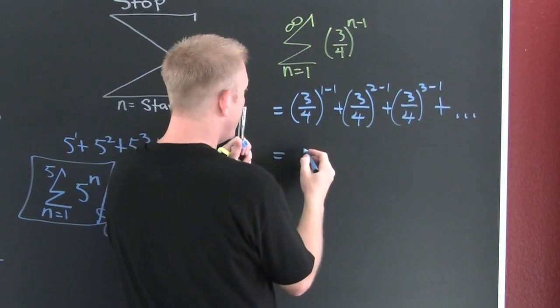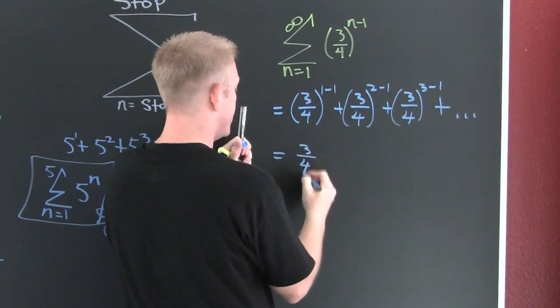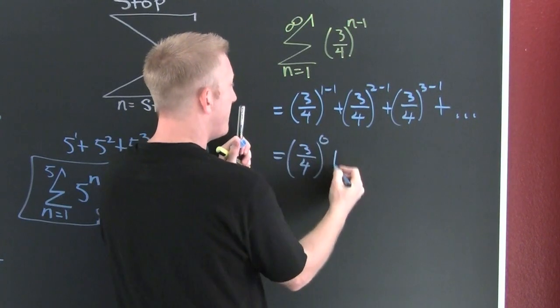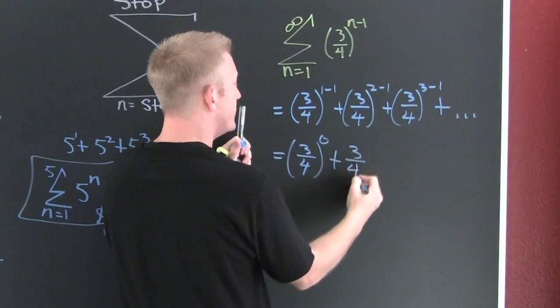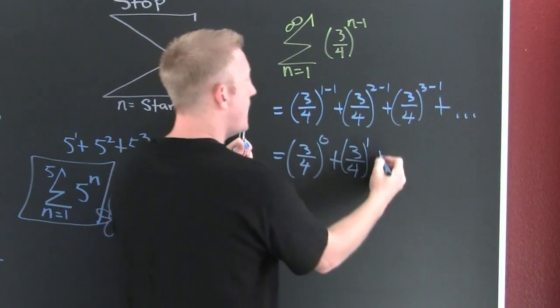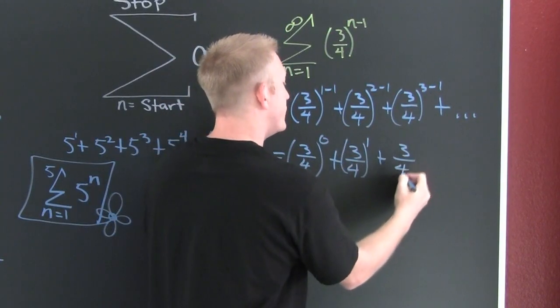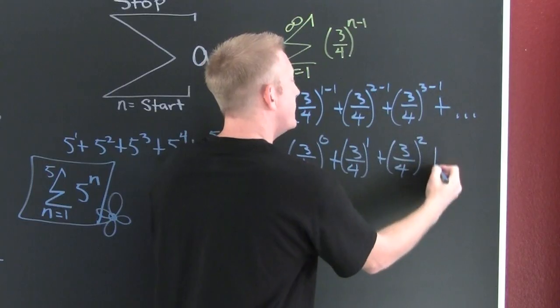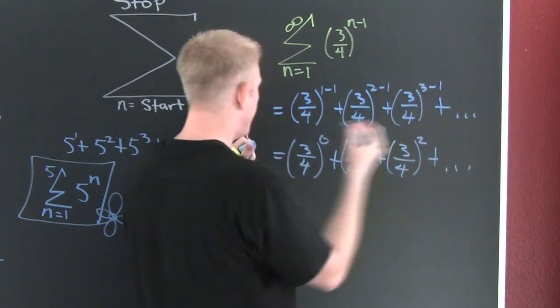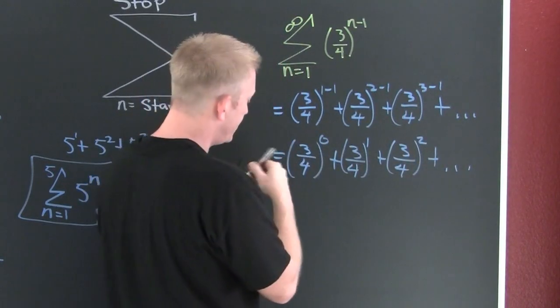This is going to be three fourths to the zero plus three fourths to the one plus three fourths to the two. But wait, there's more.